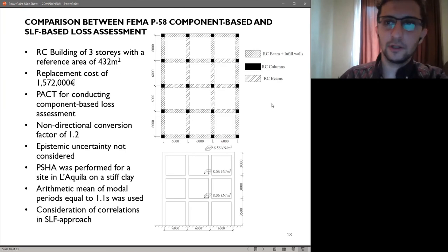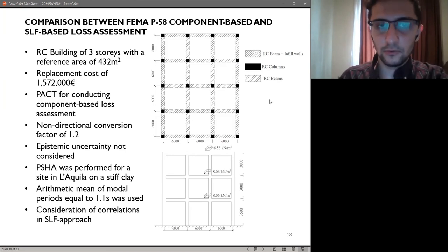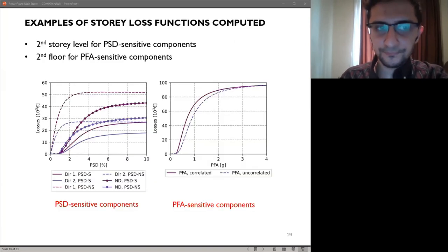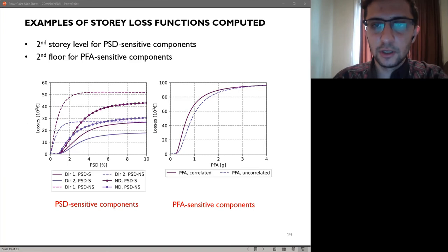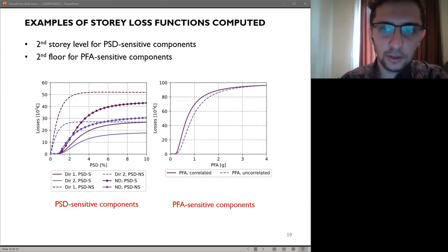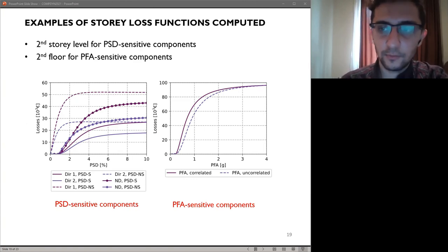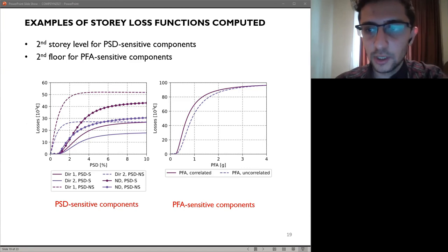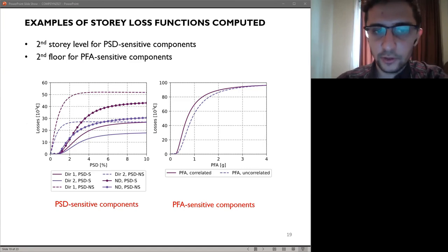Here you have the plan layout of the building as well as the elevation layout of the building. Performance grouping was applied and the regression equation by Papadopoulos, shown before, was used to carry out regression to obtain the story loss functions. These are some of the examples of the story loss functions developed through the proposed toolbox, based on the component inventory defined.